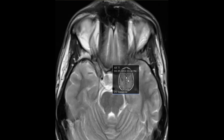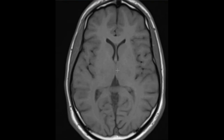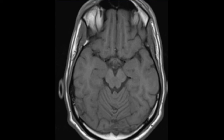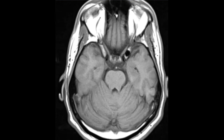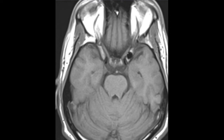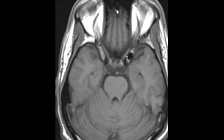We're going to put up a T1-weighted view to troubleshoot. On this view, we see the optic nerve coming along here, and the lateral wall of the optic canal is the clinoid process — a piece of bone, part of the sphenoid bone. So the anterior clinoid process is here.